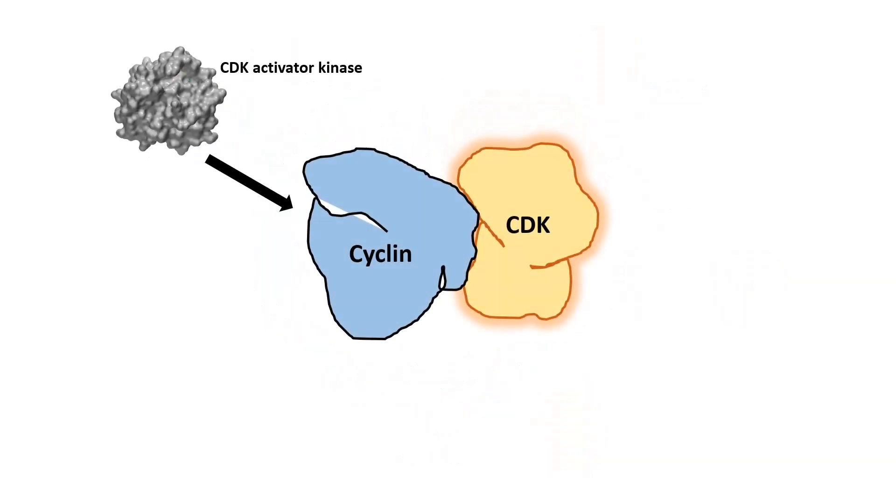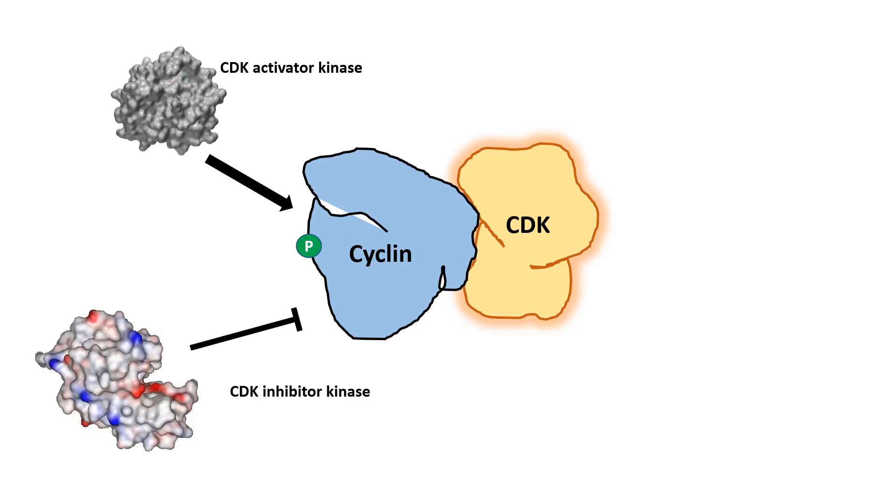Cyclin and CDK can also be modulated by other modulators like CDK activator kinase, which gives rise to activatory phosphorylation into the CDK or the CDK-cyclin complex. Or there are other cases where CDK inhibitors inhibit the CDK and thereby inhibit the cyclin-CDK complex from functioning. This is how cyclins, CDKs, and also cyclin-CDK modulators together in combination monitor how the cell cycle progression can occur. This constitutes the molecular aspects of the cell cycle checkpoints.